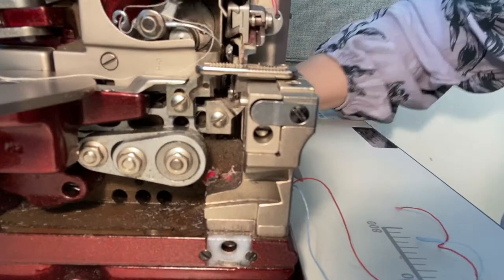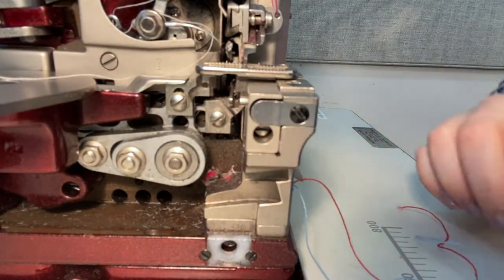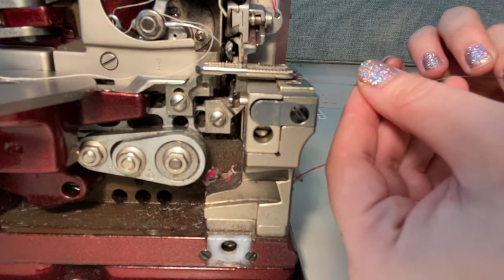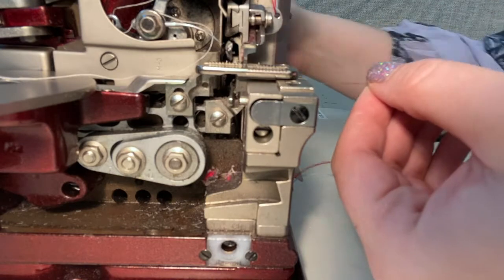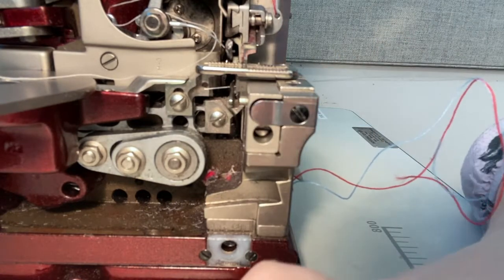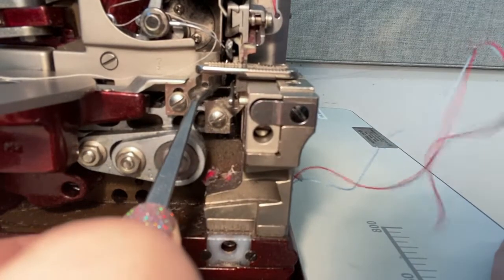Threading through this tunnel is the trickiest step with this machine. You will need to use a threading tool and the eye of the looper needle must be perfectly in line with the tunnel. Spin the flywheel until you can see the lower looper bobbing towards the left. You will be able to tell when the looper aligns correctly because you will be able to push the threading tool all the way through.